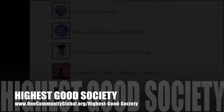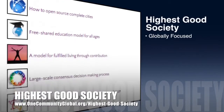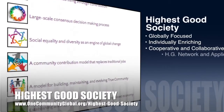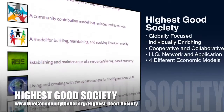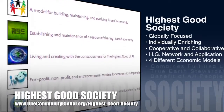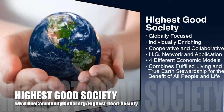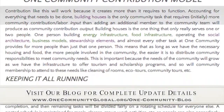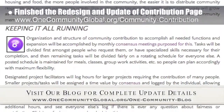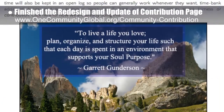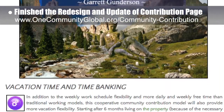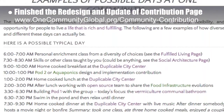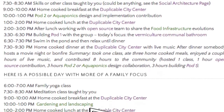The One Community approach to Highest Good Society is globally focused, individually enriching, cooperative and collaborative, includes a Highest Good network and application, four different economic models, and combines fulfilled living and true Earth stewardship for the benefit of all people and all life on this planet. This week, the core team finished the complete redesign and update of all content on the core value of contribution page, which describes the One Community model for global contribution as a path to individual freedom and positive, permanent change for everyone.